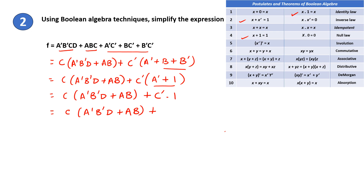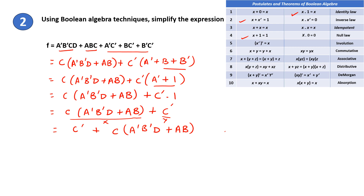That is by the identity law: X times 1 equals X, so C' times 1 is C'. Now using the commutative law, rewrite this step as C' plus C times (A'B'D plus AB). Taking this part as X and this part as Y and applying the commutative law, X plus Y equals Y plus X.